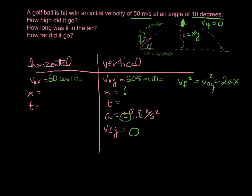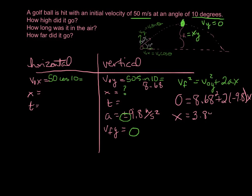V-naught sine theta equals 8.68 meters per second — when you calculate 50 sine 10, you get 8.68. Plugging into our equation: 0 equals 8.68 squared plus 2 times negative 9.8 times x. Solving for x, we find that the height is 3.84 meters. So the height the ball traveled is 3.84 meters.